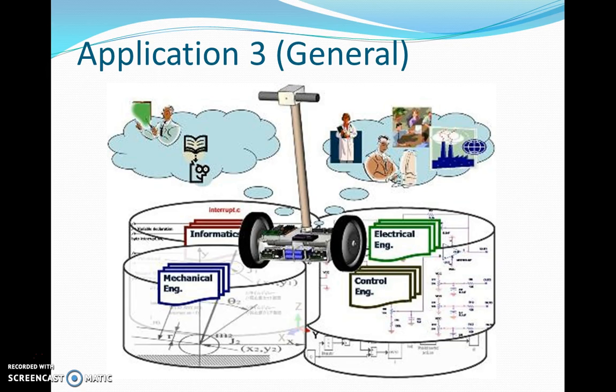Here we are finding the combination of electrical engineering, control engineering, mechanical engineering, and interrupt programming. The interrupt will be given by the buttons placed beside the human who will be using this. Depending upon those buttons, the interrupt will be given to the microcontroller, and then the controller will control the motors depending upon the inputs we are getting from the gyroscope, because the gyroscope is acting as a sensor for this.